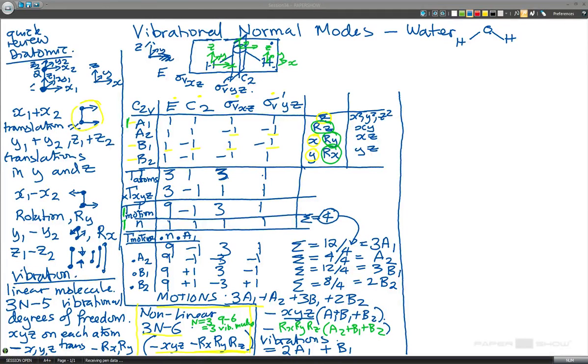So, welcome back. This is now the third video about vibrational normal modes taking the example of water, H2O. So now we got to the point where we had seen that the vibrational normal modes for water are 2A1 plus B1.